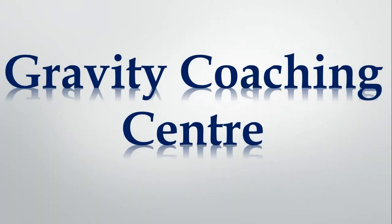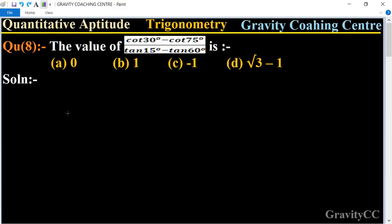Welcome to our channel Gravity Coaching Centre, Quantitative Aptitude, Chapter Trigonometry, Question number 8. The value of cot 30 minus cot 75 upon tan 15 degree minus tan 60 degree is which option? First we write cot 30 degree.